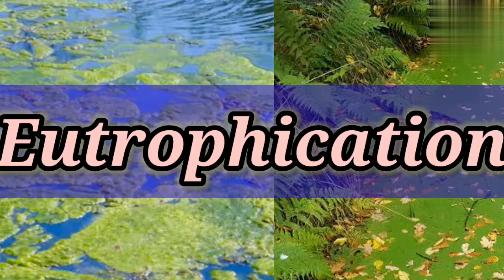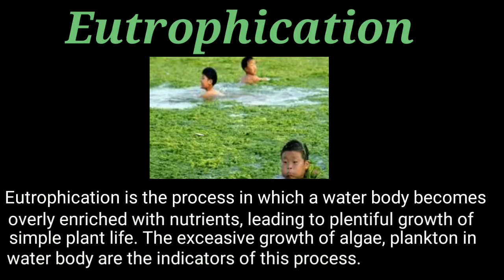Hello everyone, welcome back to my channel. Today we are discussing about Eutrophication. So what is Eutrophication? Eutrophication is the process in which a water body becomes overly enriched with nutrients, leading to plentiful growth of simple plant life. The excessive growth of algae and plankton in a water body are the indicators of this process.